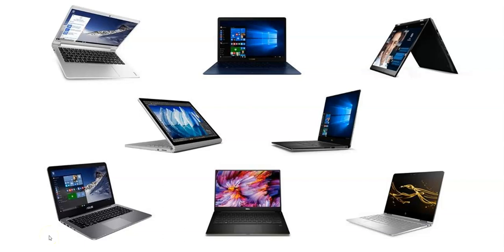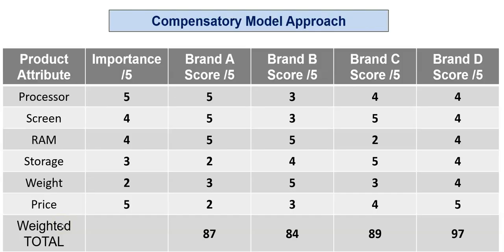We're going to look at a consumer buying a laptop. The first thing we'll examine is the compensatory model and how we would structure it. We list the various attributes we want to consider, and for each we provide an importance score — out of five. Processor is five, price is five, weight is the least important at two. Then we score each of the brands out of five and get total scores.